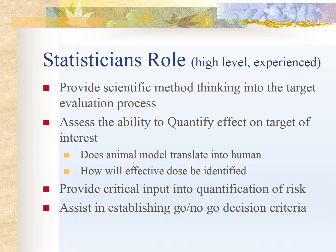The statistician's role in target identification includes providing scientific method thinking into the target evaluation process. A scientific method means quantitative methods applied to target evaluation. Statisticians assess the ability to quantify the effect on the target of interest — for example, quantifying anti-cancer effect on the cancer target. They also determine how animal model results translate into humans and how the effective dose will be identified.